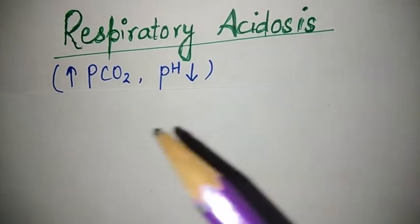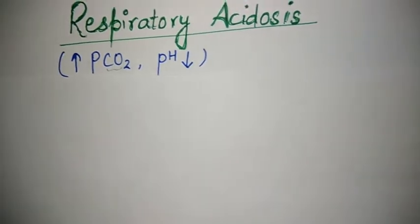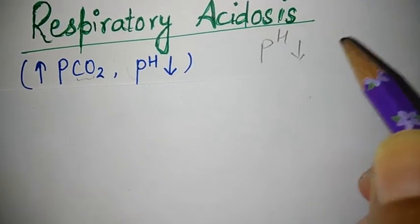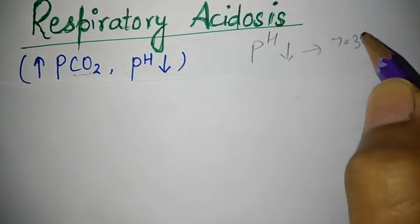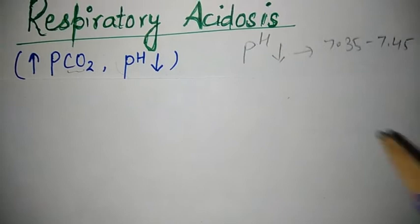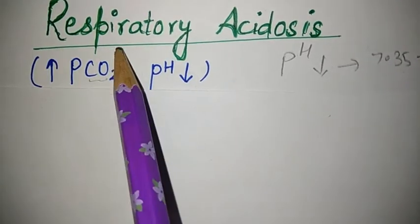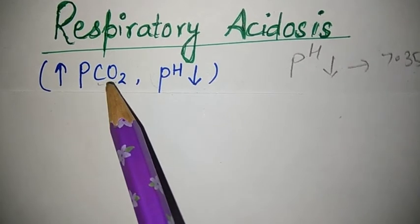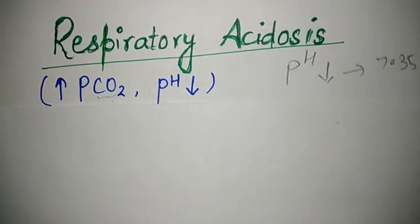Respiratory acidosis involves an increase in partial pressure of carbon dioxide and a decrease in pH. Acidosis means the pH is going to decrease. The normal blood pH is 7.35 to 7.45; if the pH is less than 7.35, that is acidosis. Since we are talking about respiratory acidosis, it is related to gases — increased carbon dioxide and decreased pH.